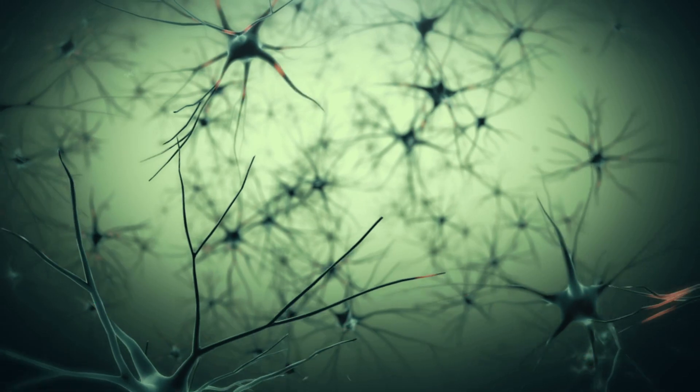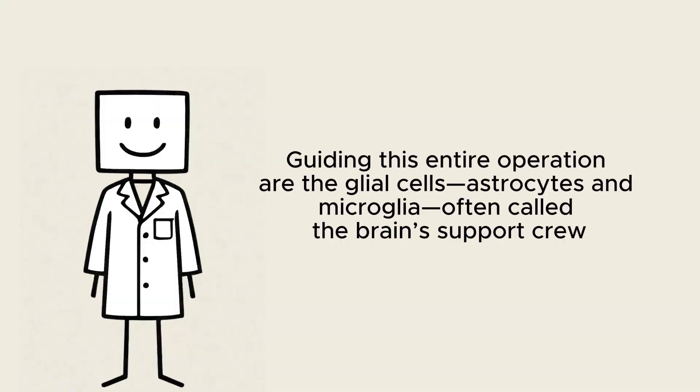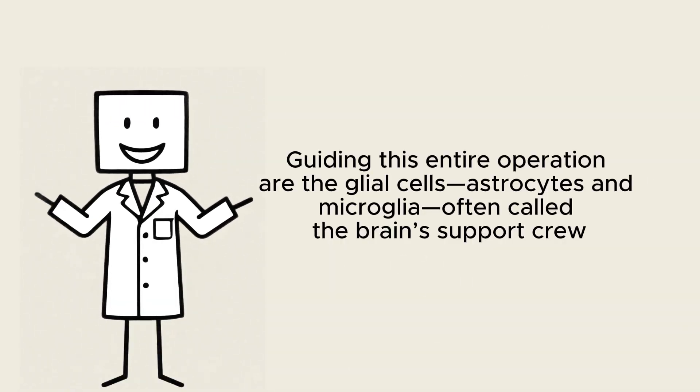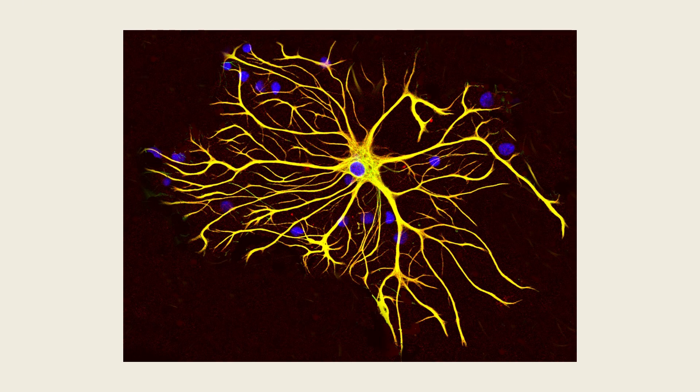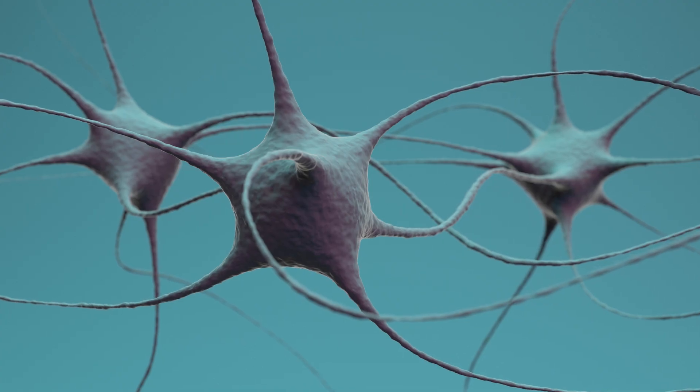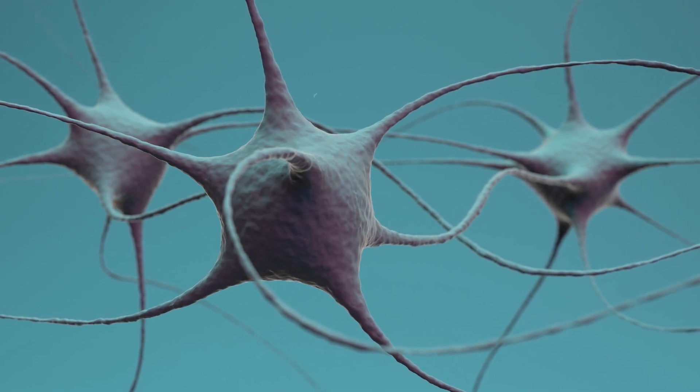From there, waste is carried away to be broken down and excreted. Guiding this entire operation are the glial cells, astrocytes, and microglia, often called the brain's support crew. Astrocytes line the paravascular spaces with specialized water channels, aquaporin-4, that regulate fluid movement. Microglia patrol for larger debris and pathogens, coordinating immune responses when necessary.